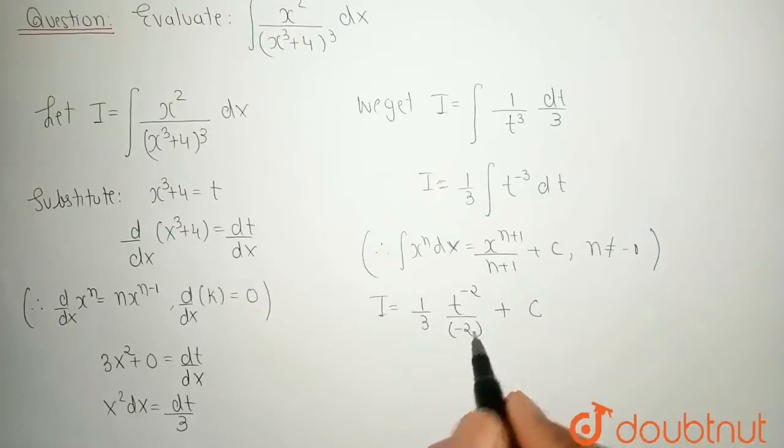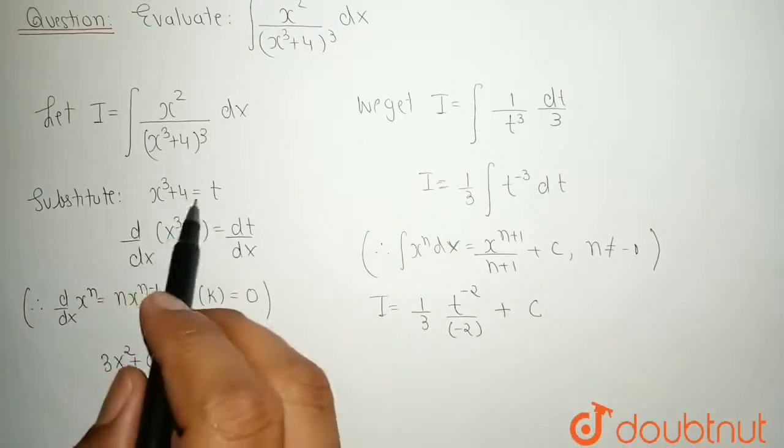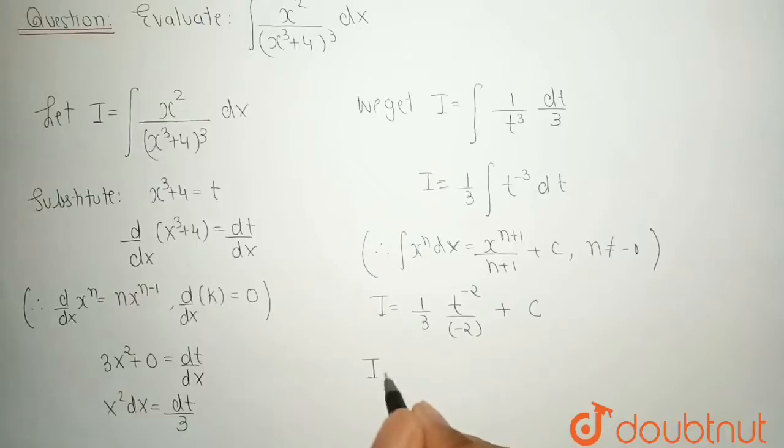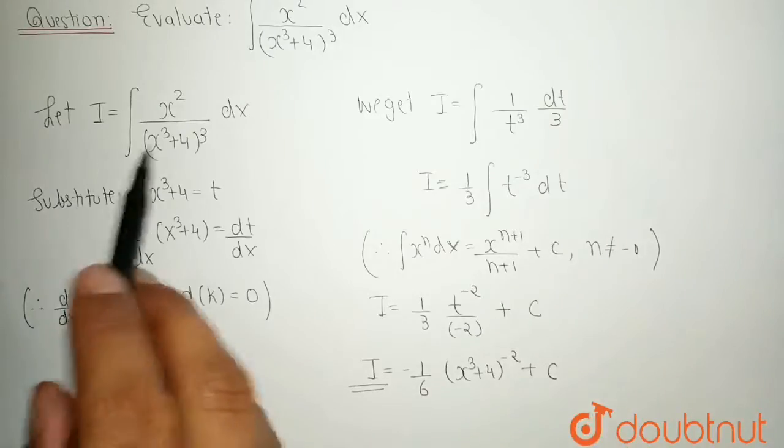Now, undo our substitution. That means replace t by x cube plus 4. So, we get I is equal to minus 1 upon 6 and t is nothing but x cube plus 4 whole power minus 2 plus c. This is our final value of given integral.